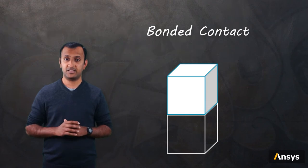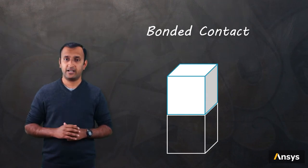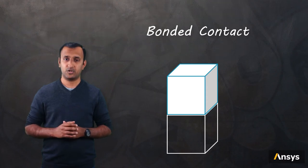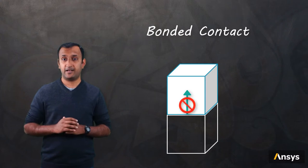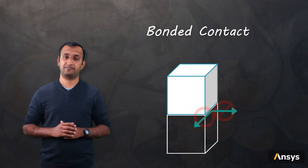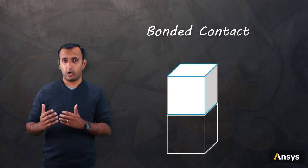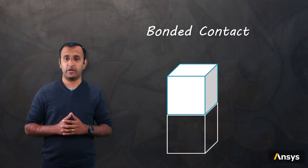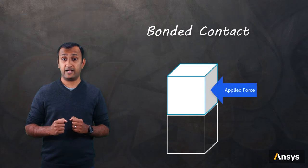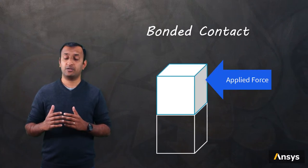As the name suggests, in this type of contact, the two surfaces are bonded to each other, so they do not penetrate each other, they do not separate from each other, and they do not slide over each other. Both the normal and tangential components are so strong that they resist any force that tends to cause relative motion between them.